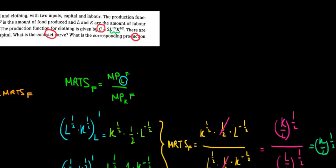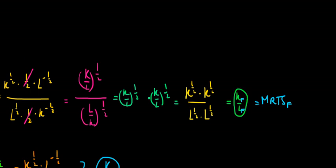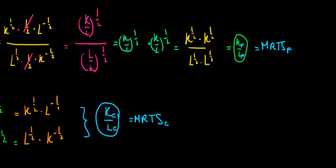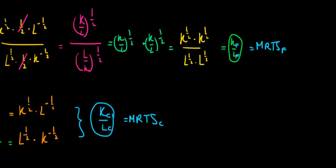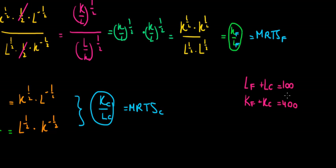So let's take that into account: 100 units of labor and 400 units of capital. The labor employed in food plus the labor employed in clothing must add up to 100, and the capital employed in food plus the capital employed in clothing must add up to 400.